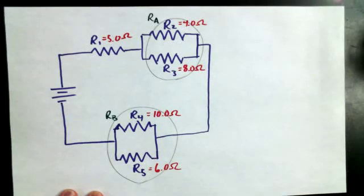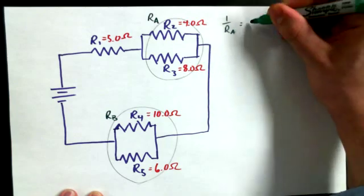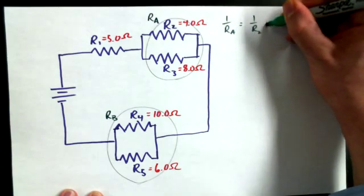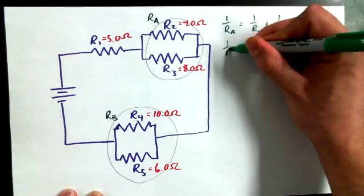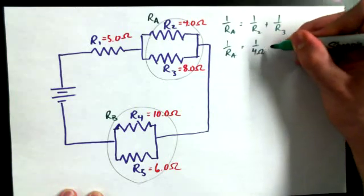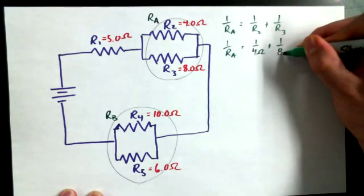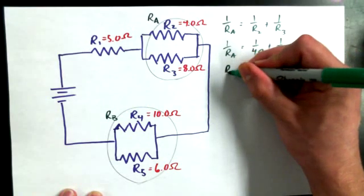So in our initial calculations for finding the resistance of junction A and junction B—that's what I'll call them from here on out—we'd say 1 over RA is equal to 1 over R2 plus 1 over R3. We could sub in our values and we'd get 1 over RA is equal to 1 over 4 ohms plus 1 over 8 ohms, and after doing 1 over 4 plus 1 over 8 and then inverting the result, what do you get for RA?